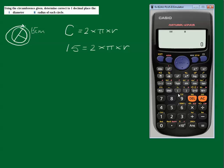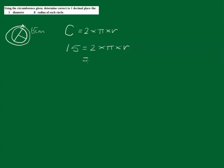Clear this, clear this. 2 times π is equal to 6.28, let's say 6.3. Okay, equals 6.3 times the radius. So 15 is equal to 6.3 times the radius.